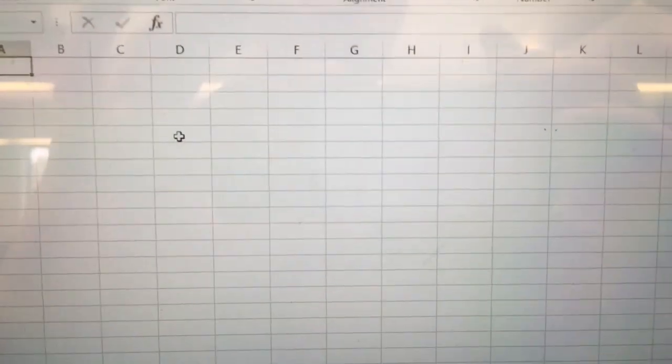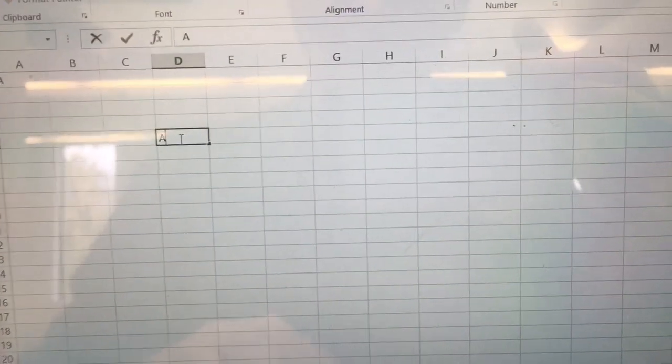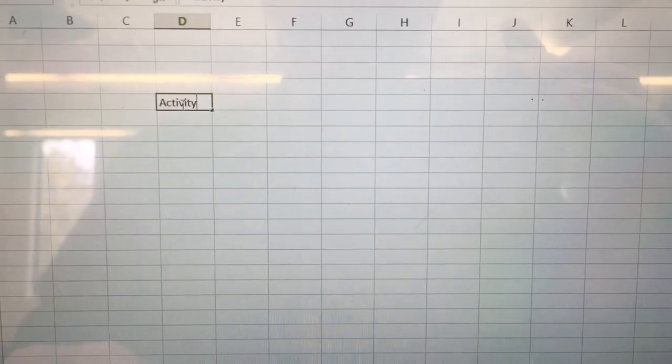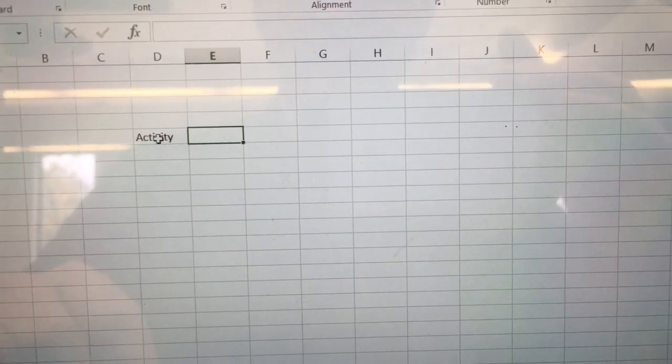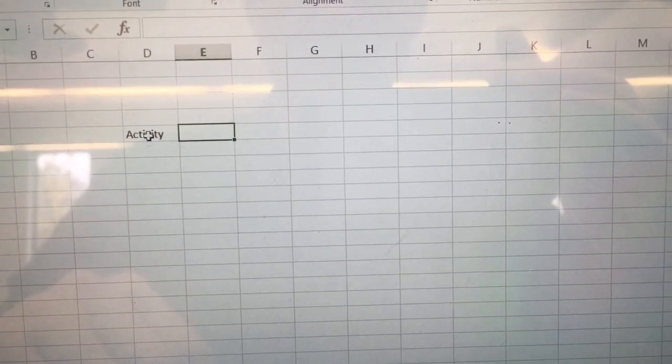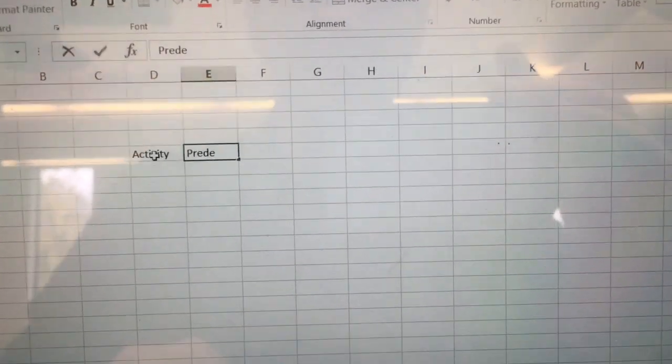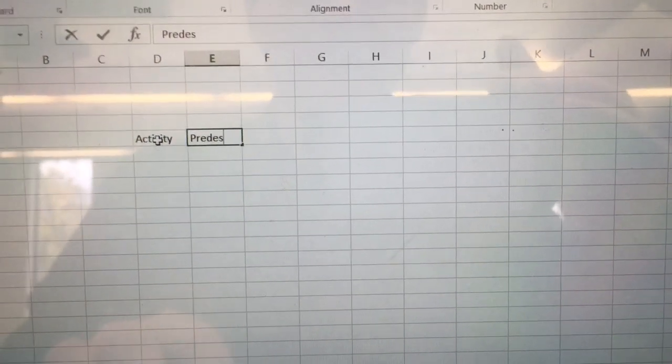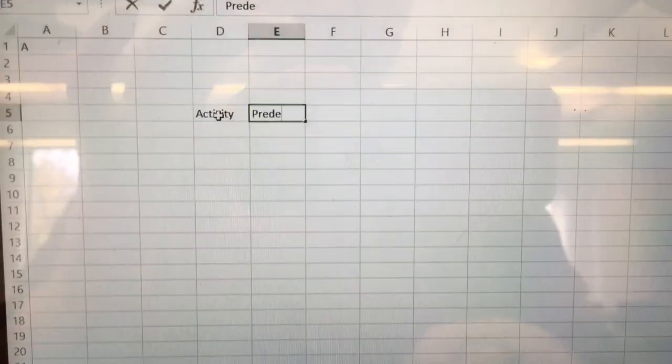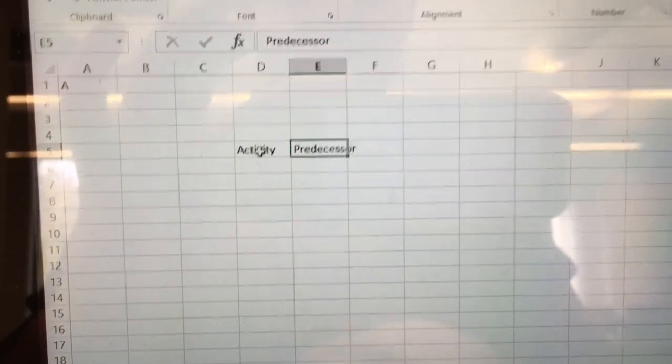First thing we want to do is create the template that we're going to use. So we're gonna have our activity, and we're gonna have a lot of times within the activity. We can actually have more information here such as who the predecessors are. Predecessor.